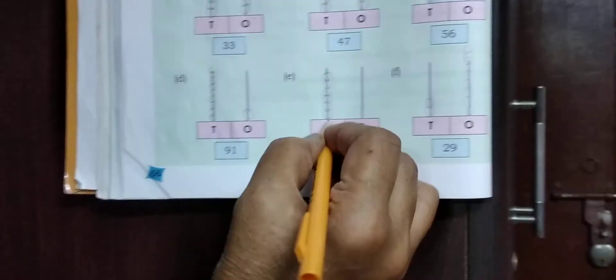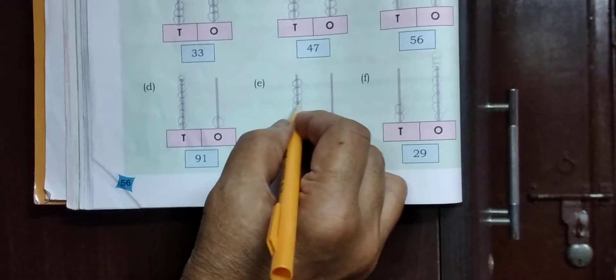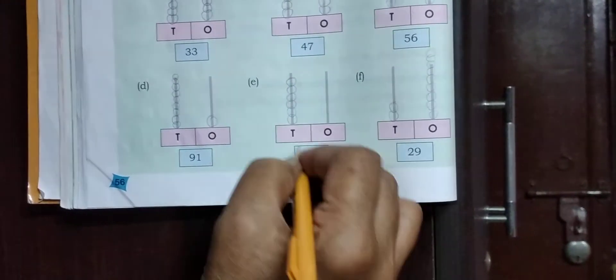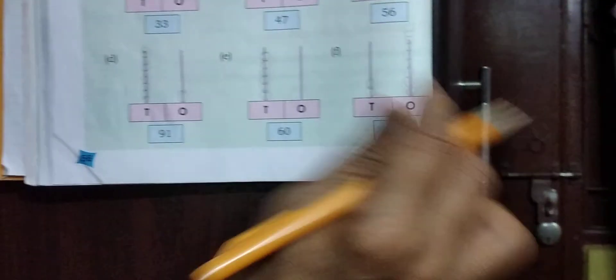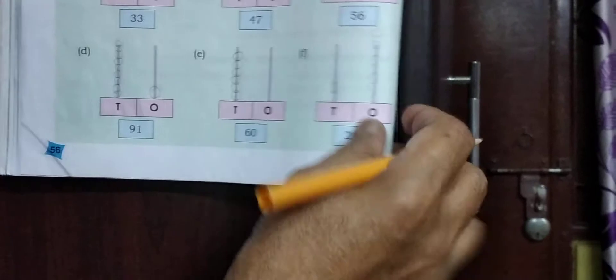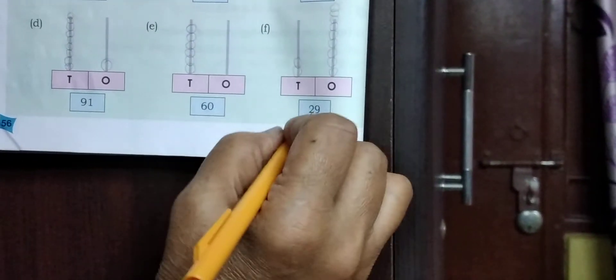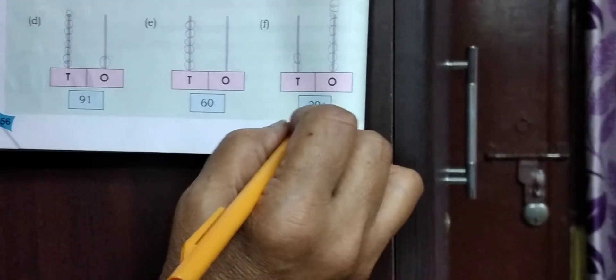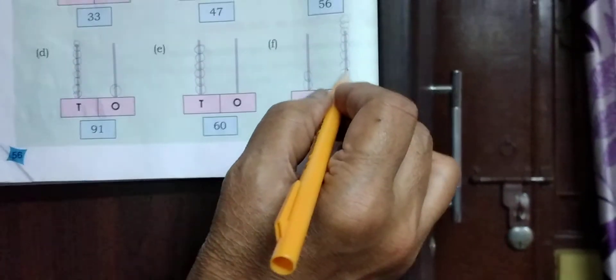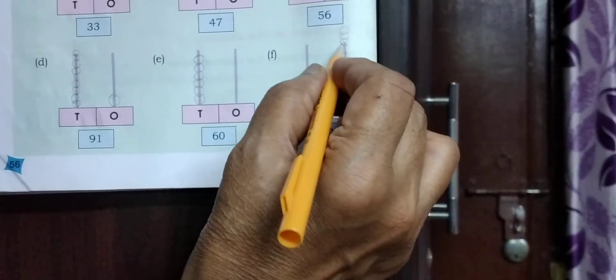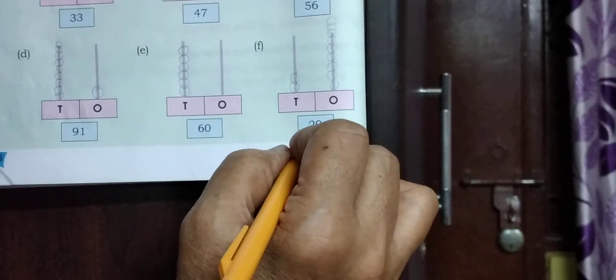Next. E: 6 tens. 1, 2, 3, 4, 5, 6. 6 tens, 0 ones. 2 tens: 1, 2, 3, 4, 5, 6, 7, 8, 9. 9 ones. 29.